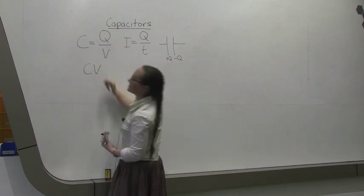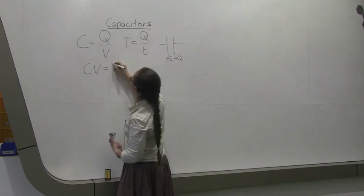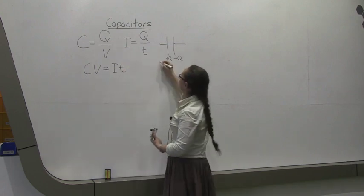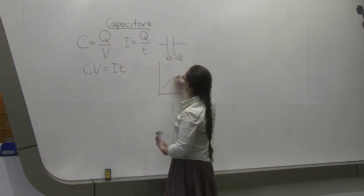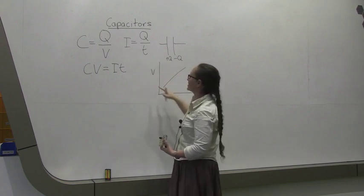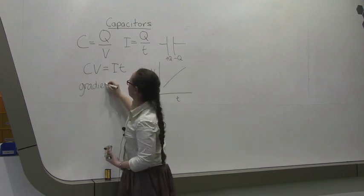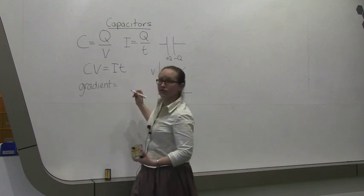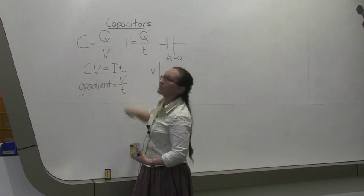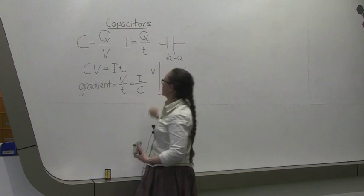So, as you can see from these two equations, CV, capacitance times voltage, which is equal to Q from that equation, is equal to Q from this equation, which is IT. So, if you were to plot a graph with voltage on the y axis and time on the x axis, the gradient of this graph is simply going to be the rise over the run, the voltage over the time, which if we rearrange this equation, you can see that's going to be equal to the current over the capacitance.